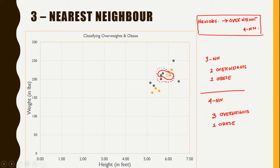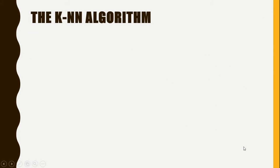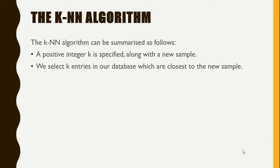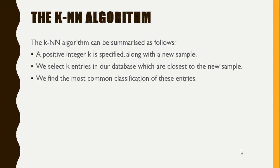This is how it works. The KNN algorithm can be summarized as follows: a positive integer K is specified along with a new sample; we select the K nearest entries in our database which are closest to the new sample; we find the most common classification of these entries; and finally, this is the classification we give to the new sample.